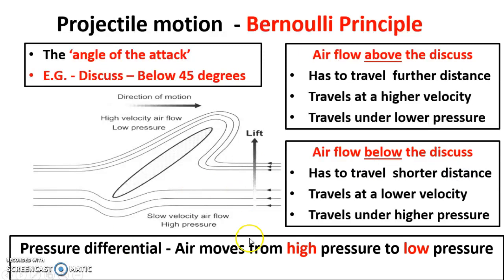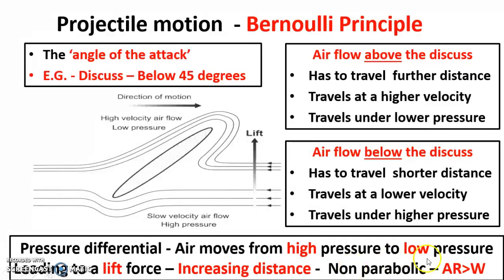Because there is high pressure below and low pressure above, this causes a pressure differential. The air moves from high pressure to low pressure, and this leads to a lift force which directly increases horizontal distance in a non-parabolic flight path. This is a non-parabolic flight path because the angle and the weight of the discus give it that chance for the air to lift it — unlike the shot put. The reason lift force takes place is because air resistance is greater than weight, meaning weight has less influence when the Bernoulli principle is applied.